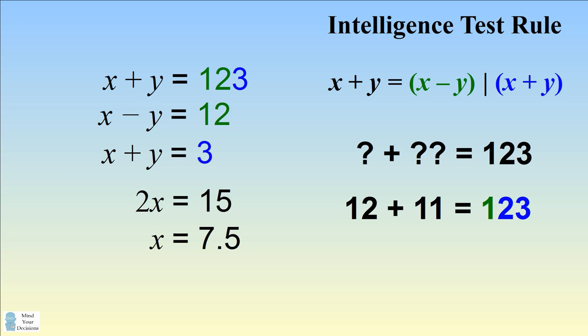We can solve these equations similarly and we'll get that x is equal to 7.5 and y is equal to negative 4.5. So this is another answer to this new problem I've suggested.